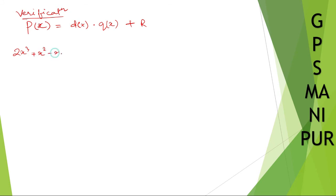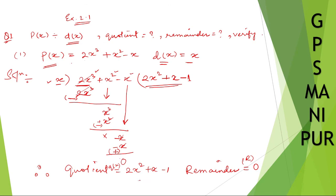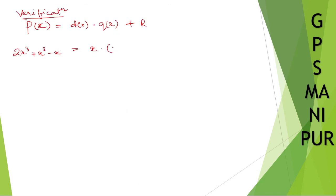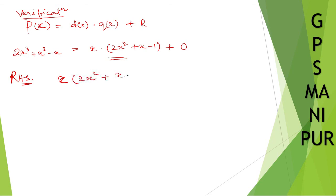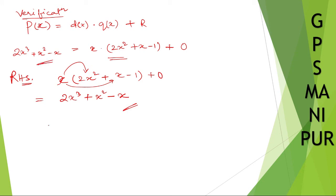Taking the right-hand side: x into (2x² + x − 1) plus 0. x into 2x² = 2x³, x into x = x², and x into −1 = −x. So the right-hand side equals 2x³ + x² − x, which is equal to the left-hand side. Hence verified.